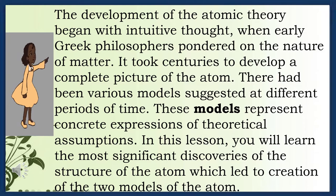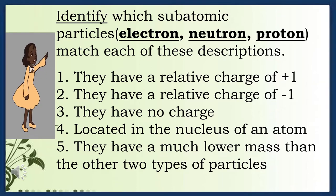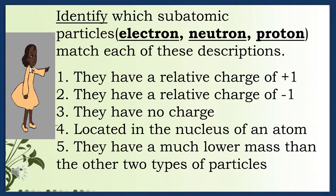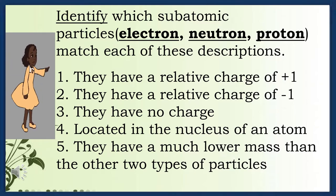In this lesson, you will learn the most significant discoveries of the structure of the atom which led to the creation of two models. These models identify which subatomic particles match each description. Question 1: They have a relative charge of positive 1 — the answer is proton. Question 2: They have a relative charge of negative 1 — the answer is electron. Question 3: They have no charge — the answer is neutron. Question 4: Located in the nucleus — the answer is proton and neutron. Question 5: They have a much lower mass than the other two types of particles.